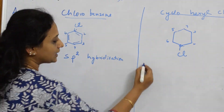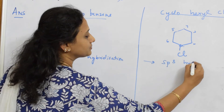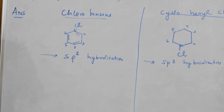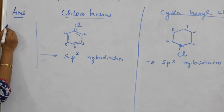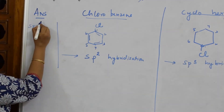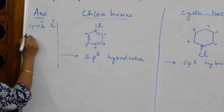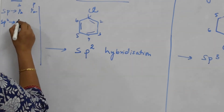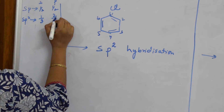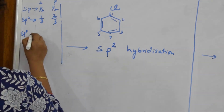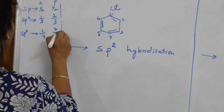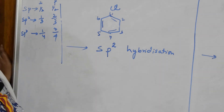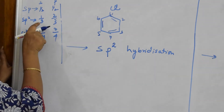In cyclohexyl chloride, carbons C1 through C6 have sp3 hybridization. Recalling from grade 11: in sp hybridization, s and p character are each 50%; in sp2, s character is 1/3 and p character is 2/3; in sp3, s character is 1/4 and p character is 3/4. So in sp2, the s character is greater than in sp3.